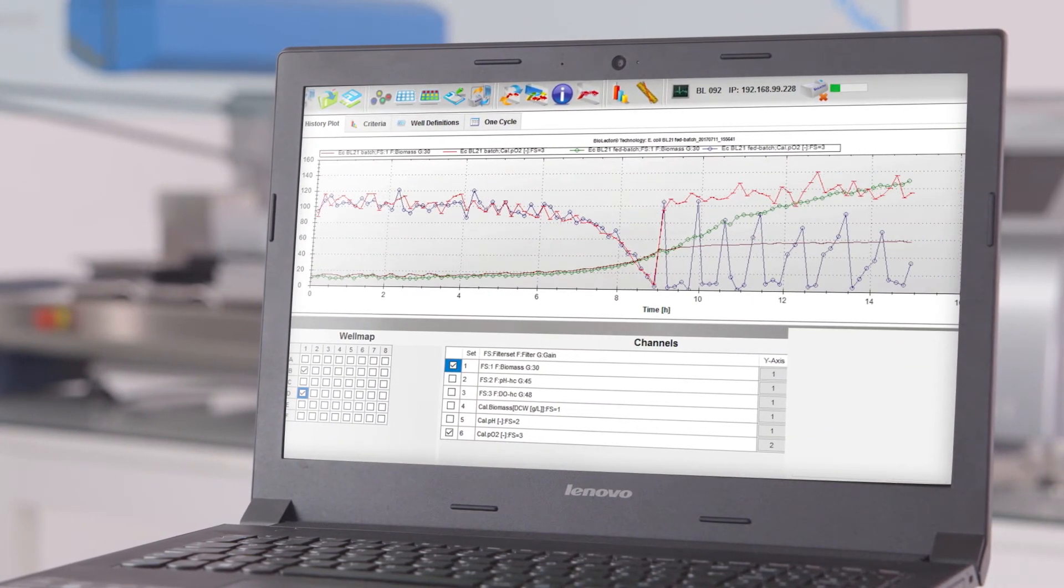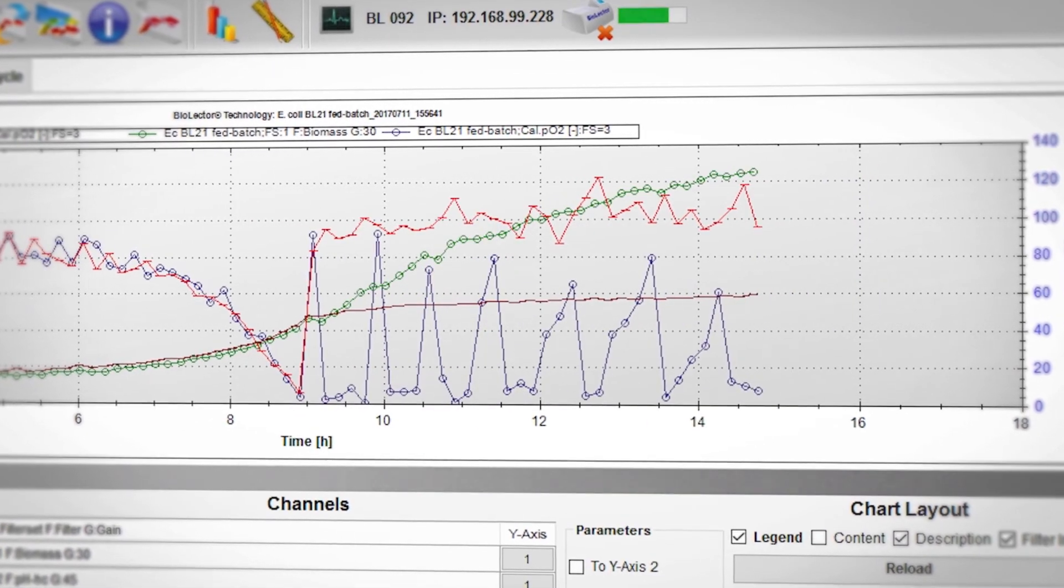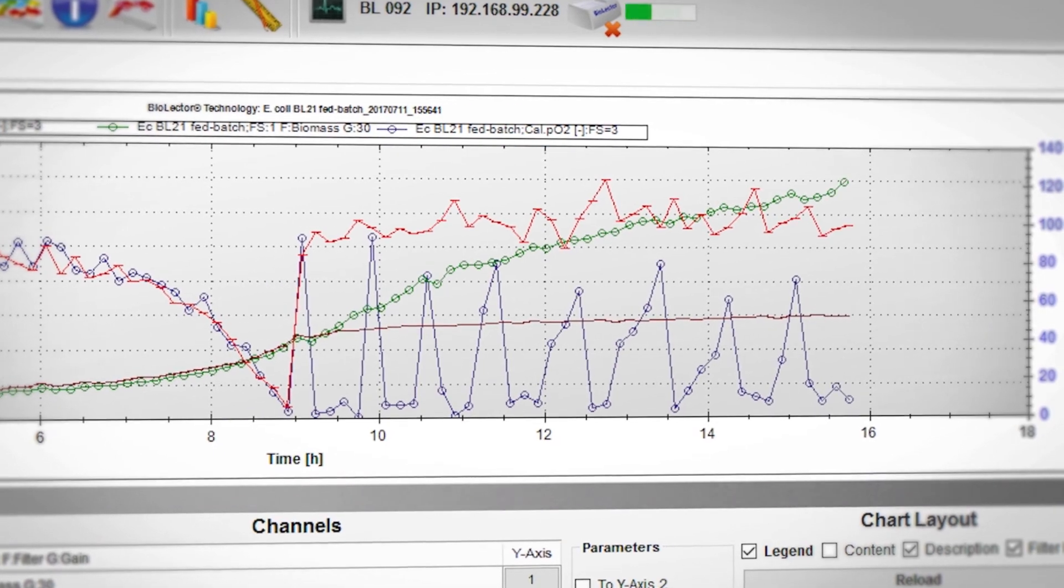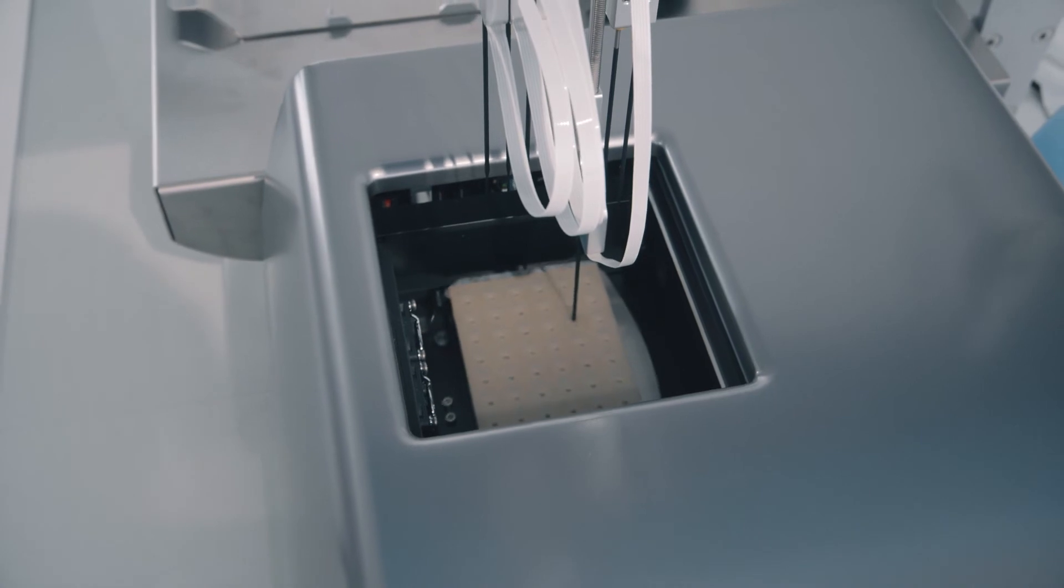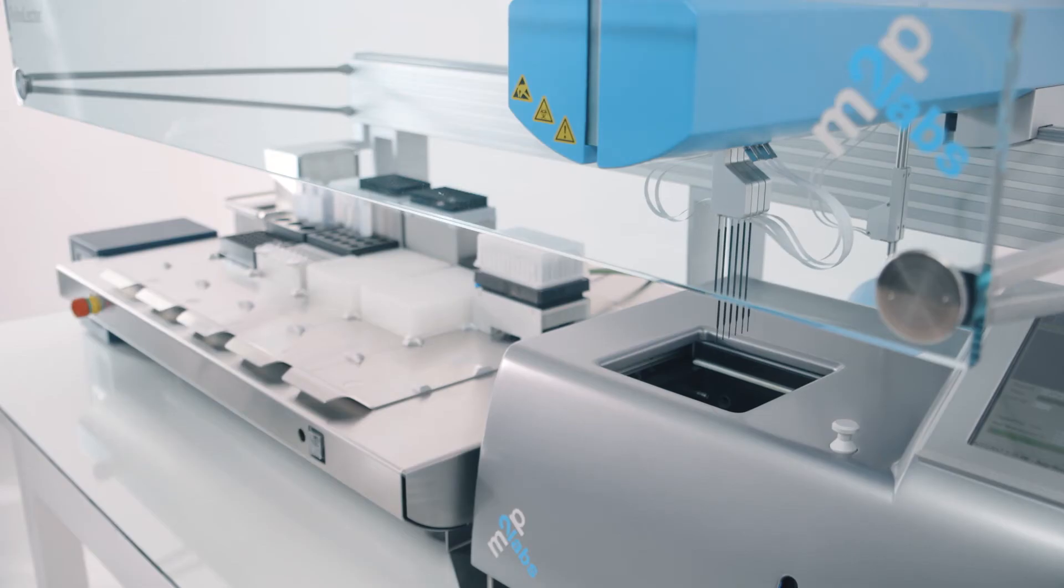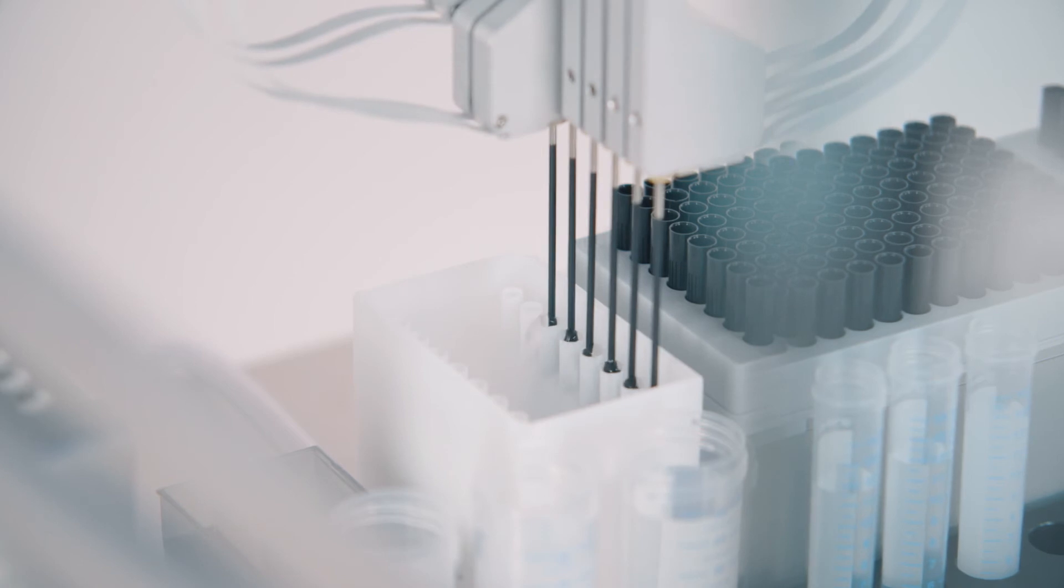Possible trigger signals are dissolved oxygen concentration, biomass, fluorescence, pH value, or process time. The needles pierce the silicone foil covering the shaking MTP. Afterwards, simple cleaning is required.